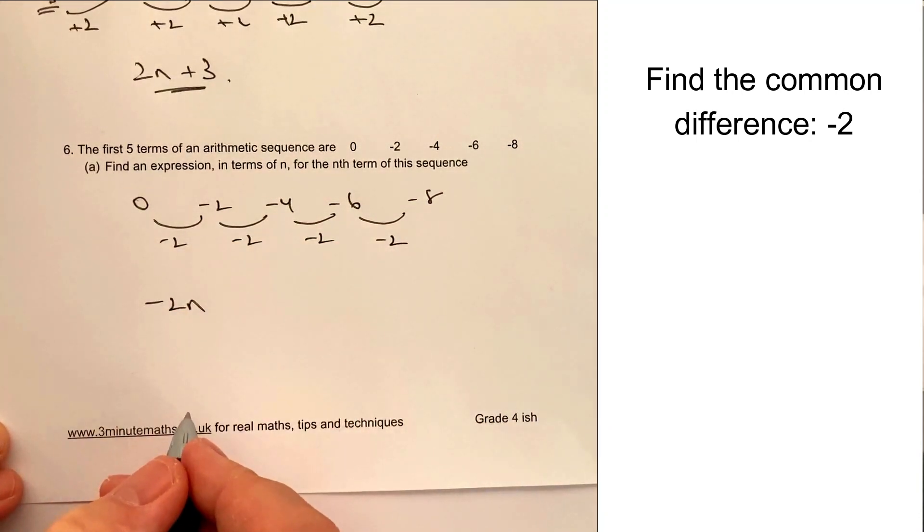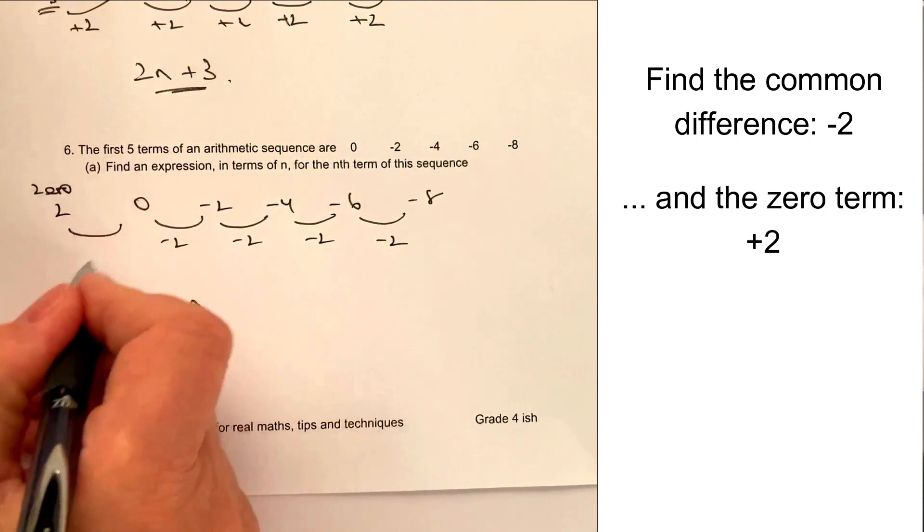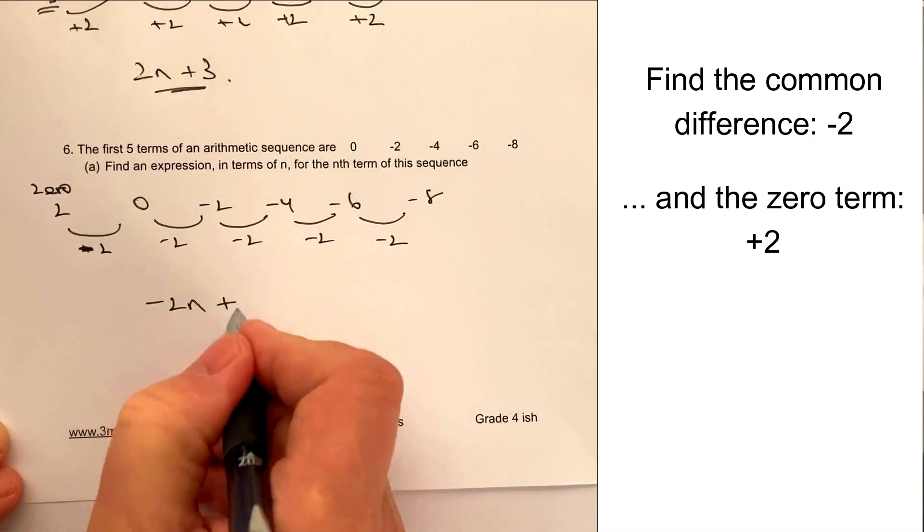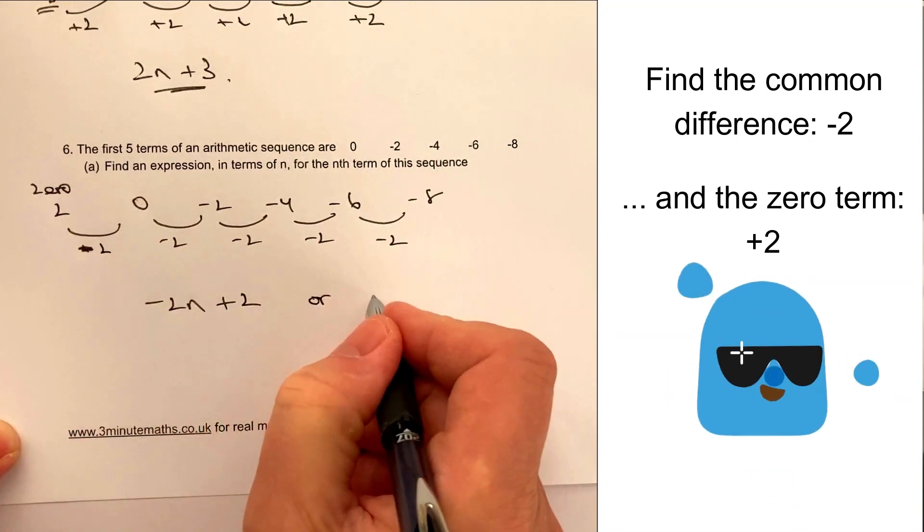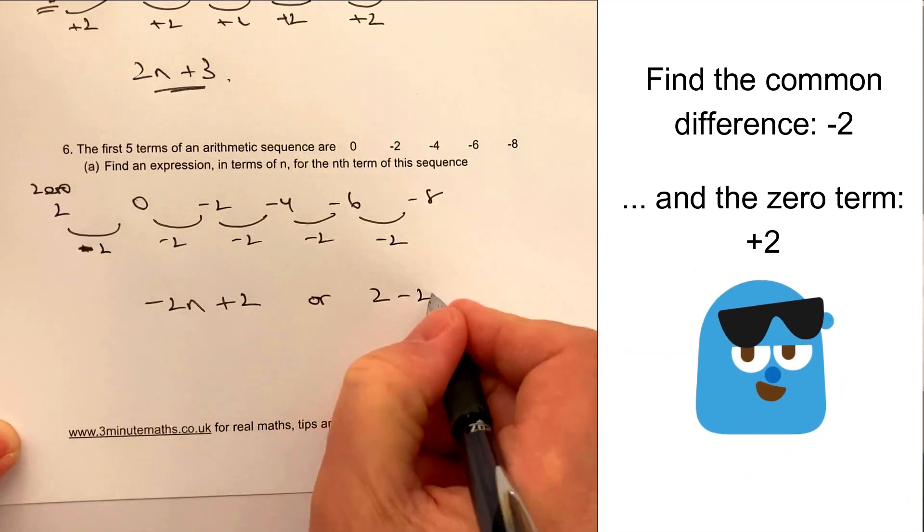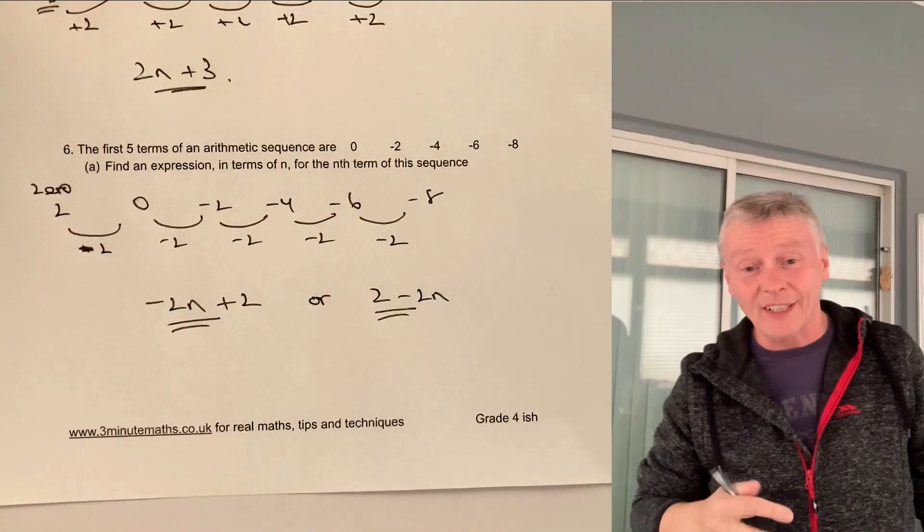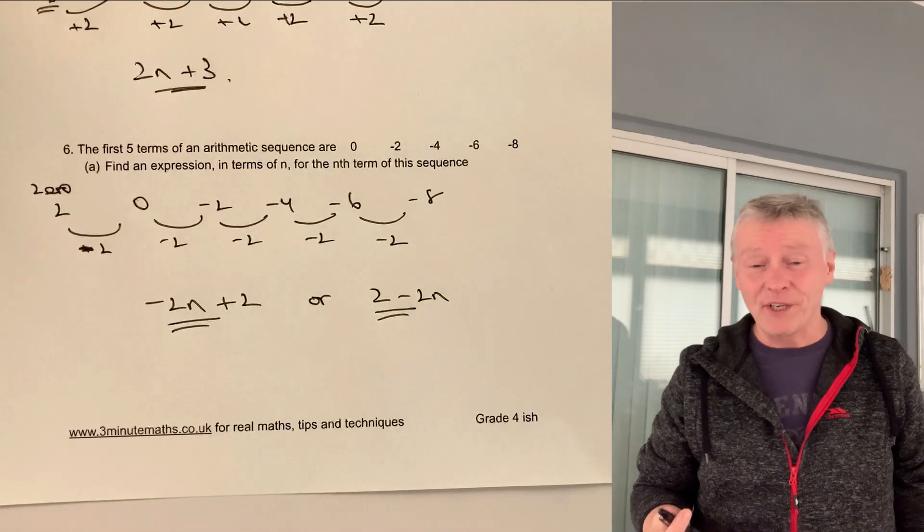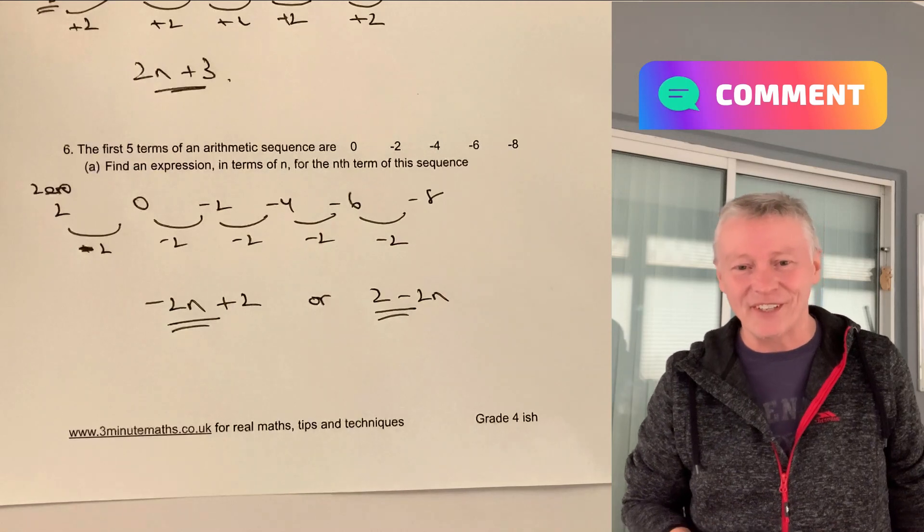And then, as I mentioned before, we've got the 0 term, which in this particular case is positive 2, because we minus 2 to get to 0. So it's going to be minus 2n plus 2, or we can write that as 2 minus 2n. It doesn't matter which way around we have it. But basically, that's the nth term for that particular sequence. Hope this video has been useful. Please do add a comment below if you're not sure about anything. Look forward to seeing you in the next video.